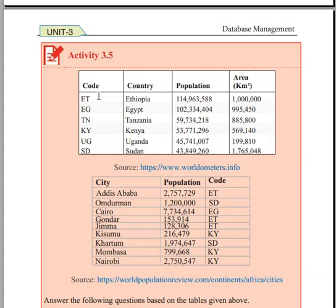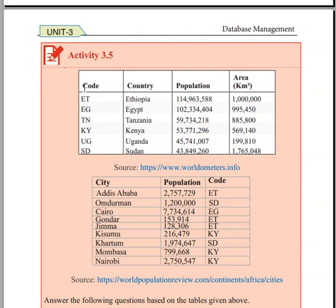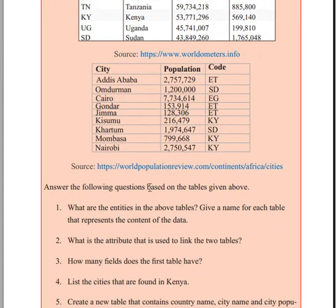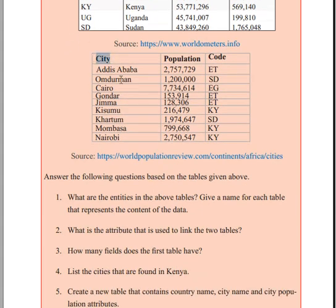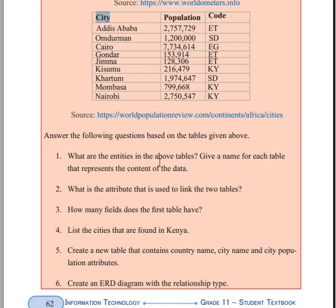We can see that the entity name is the table. We can see that country, population, and area form the country table. The city population should be the city table. The two table entity names are country and city.